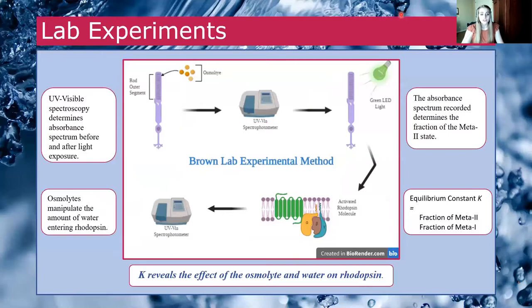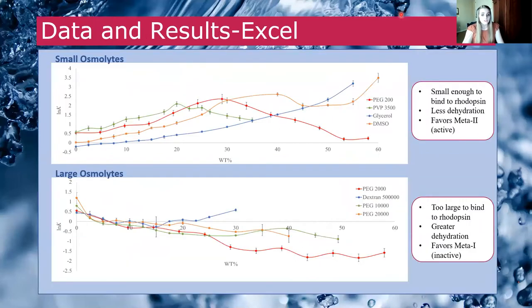The fraction of active state rhodopsin is quantified via UV-visible absorbent spectrum before and after light exposure in the presence of various osmolytes, which reveals the equilibrium constant. Small osmolytes favor the active state because they have a natural log of the equilibrium constant that is greater than zero.